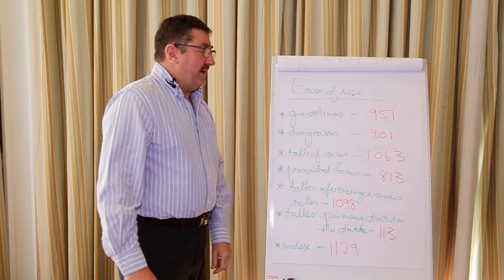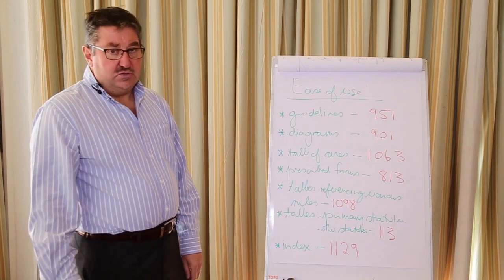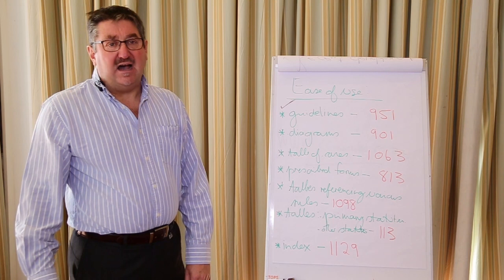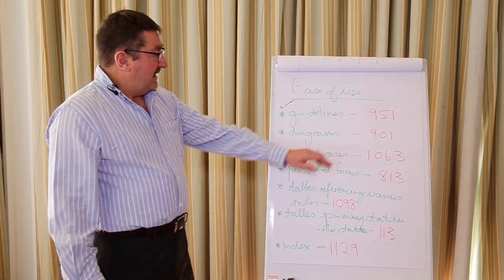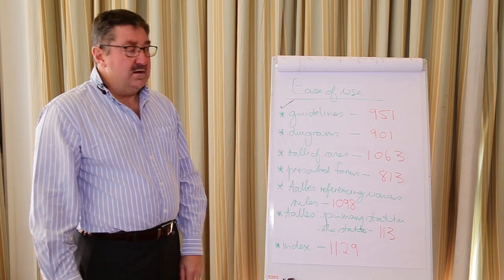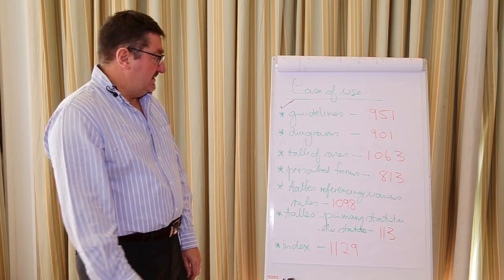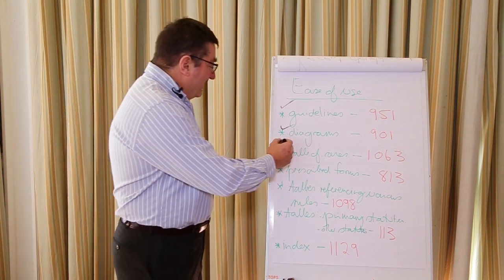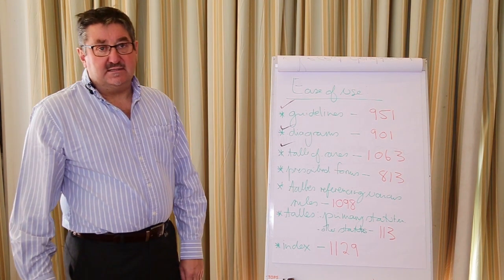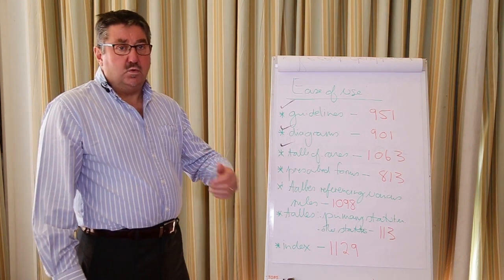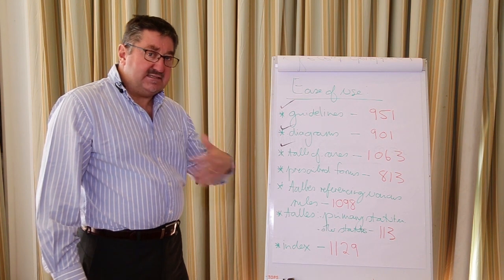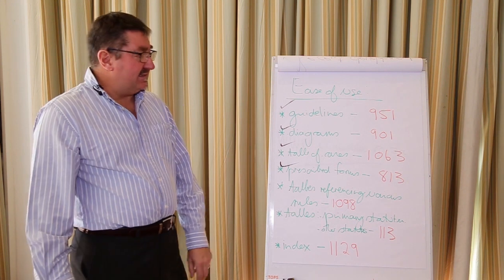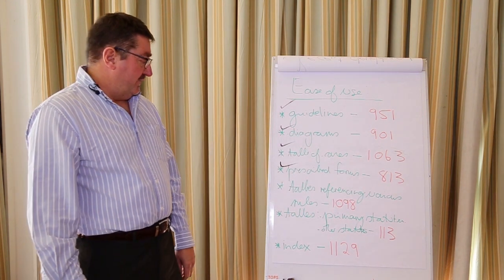The second issue that I want to talk about is the ease of use if you purchase this publication. Various guidelines are provided — for instance, if you look on page 951, that's just an example of how we provide guidelines. Various diagrams are provided and there are extensive tables of cases of both the Labor Court, Labor Appeal Court, High Court, and the CCMA rules. The new prescribed forms are dealt with extensively on page 813 of the book.